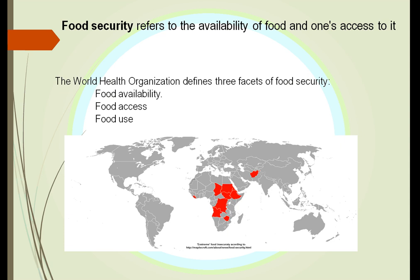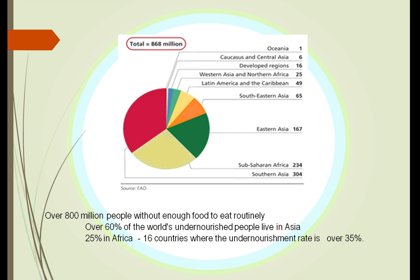Here's a map of the world showing extreme food insecurity. You can see there's a lot in Africa. Many countries do not have access to any types of food, where starvation is rampant. Over 800 million people do not have enough food routinely. 60% of the world's undernourished people live in Asia. In Africa, there are 16 countries where the undernourished rate is over 35%.